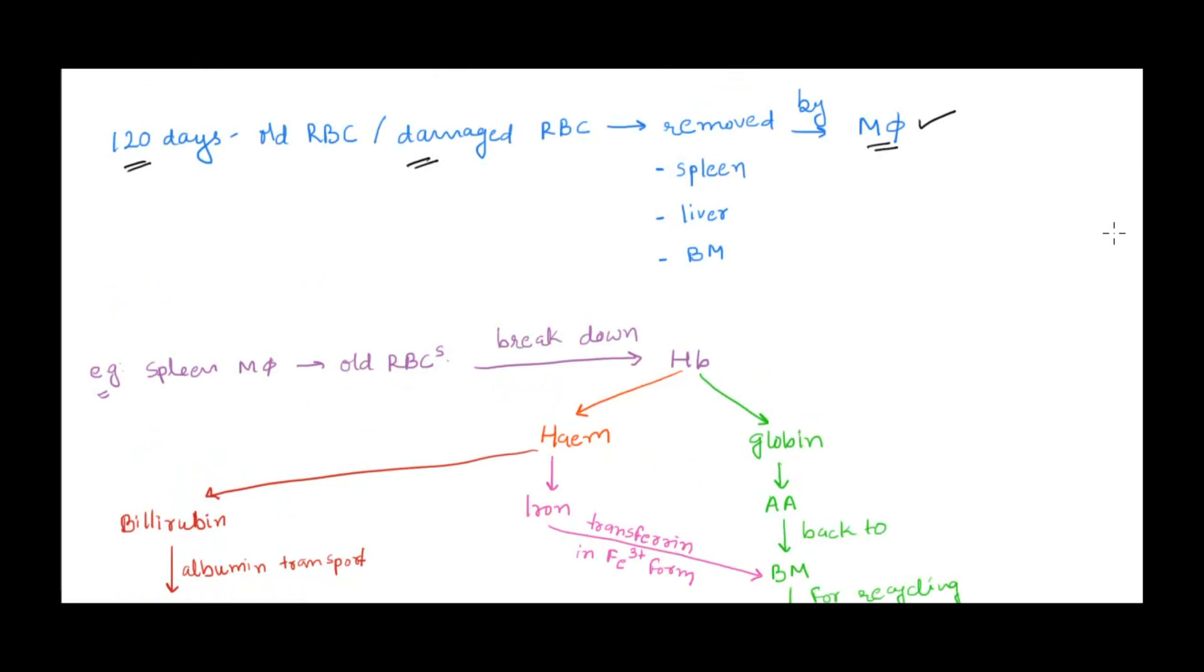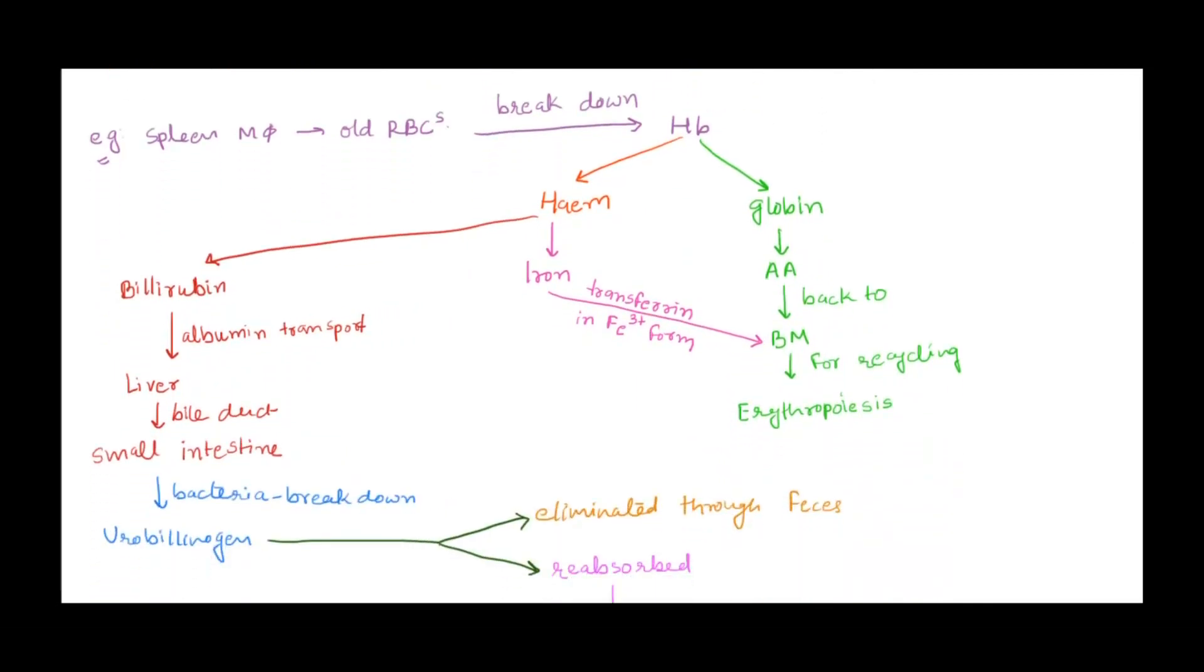Old or damaged RBCs are removed by macrophages in three main sites: spleen, liver, or bone marrow. Any one of these three sites can be the site of destruction. Let's take the example of spleen. Macrophages of the spleen engulf and destroy the old RBC.